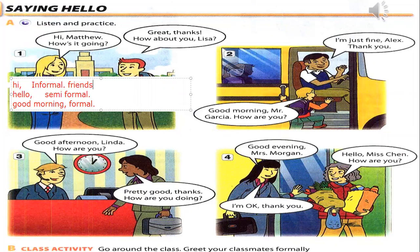Formal is used in official or professional settings. So friends, family members, relatives, neighbors — sometimes even with unknown people of the same age — in those cases we use informal. Then semi-formal is used when you meet someone more often, over time.